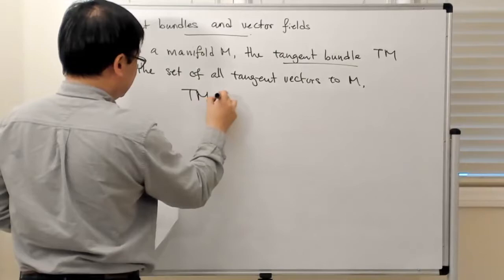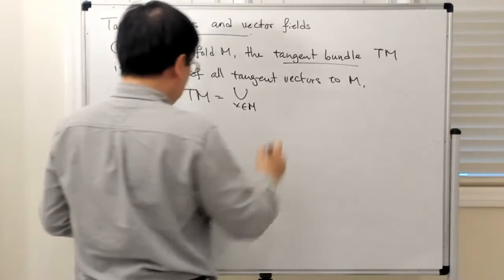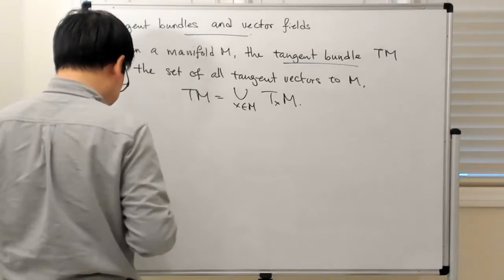One way to think about this is that TM is the union over base points X in M of the tangent spaces at X to M.